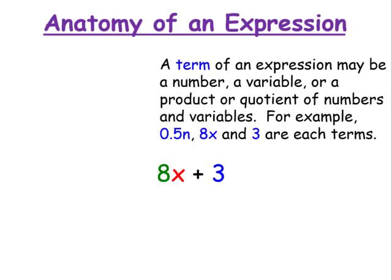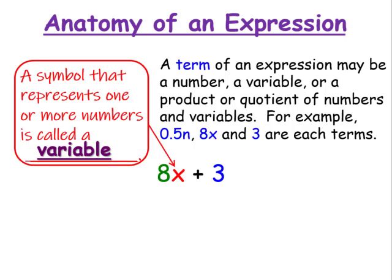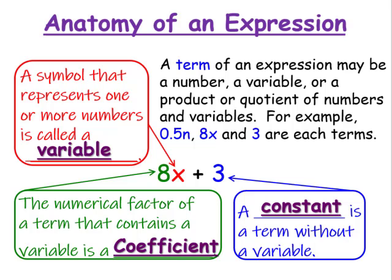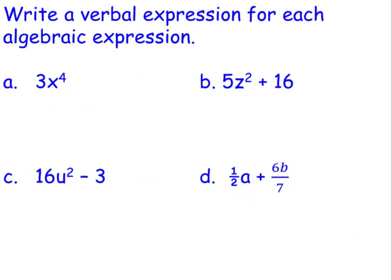The anatomy of an expression. A term of an expression may be a number, a variable, or a product or quotient of numbers and variables. For example, 0.5n, 8x, and 3 are each terms. When we take a look at the variable in 8x plus 3, the variable is x. A symbol that represents one or more numbers is called a variable. The coefficient is 8. A numerical factor of a term that contains a variable is a coefficient. And the constant is 3. A constant is a term without a variable.